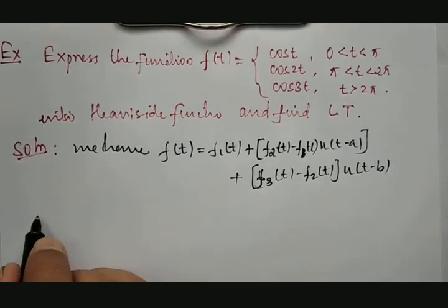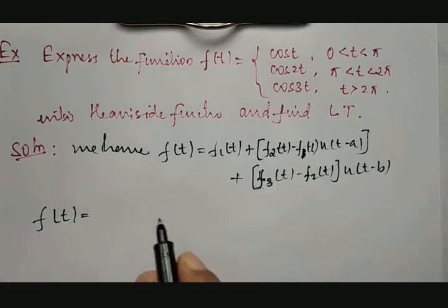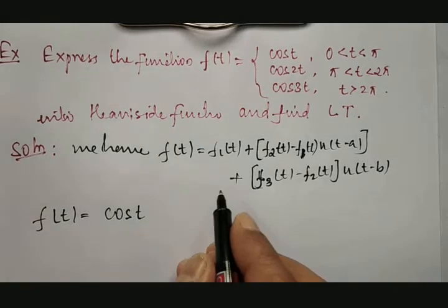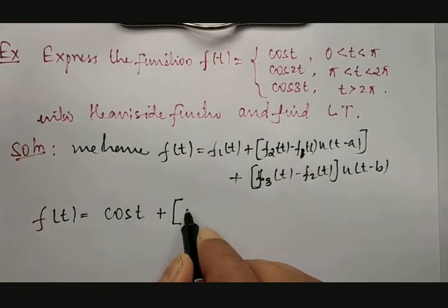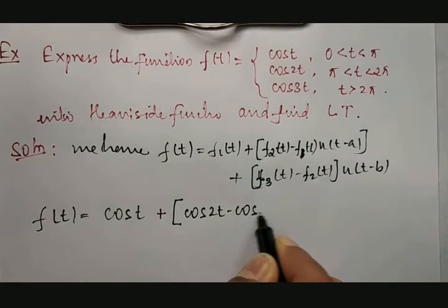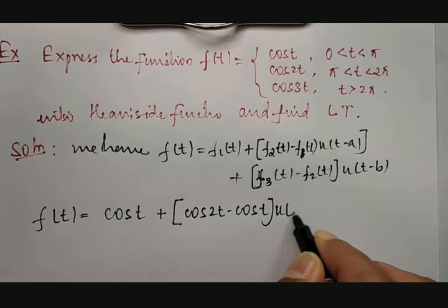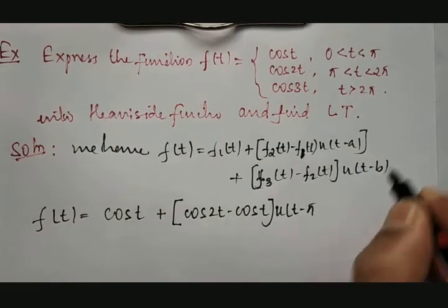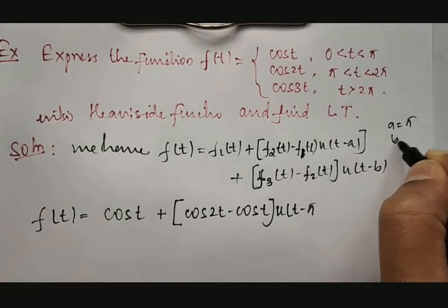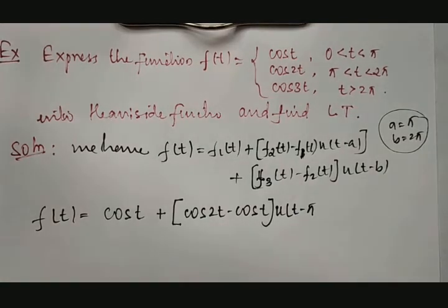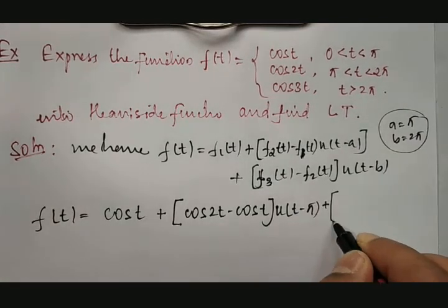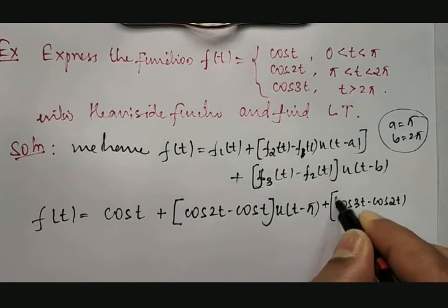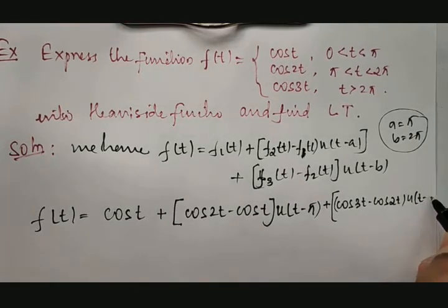Therefore, f(t) becomes: cos t + [cos 2t − cos t]·u(t − a) + [cos 3t − cos 2t]·u(t − b), where a = π and b = 2π.